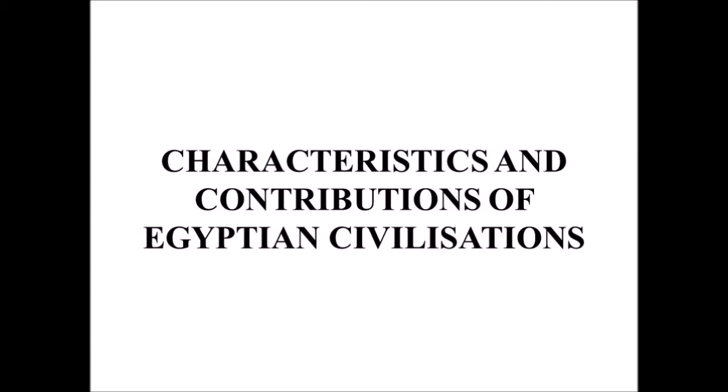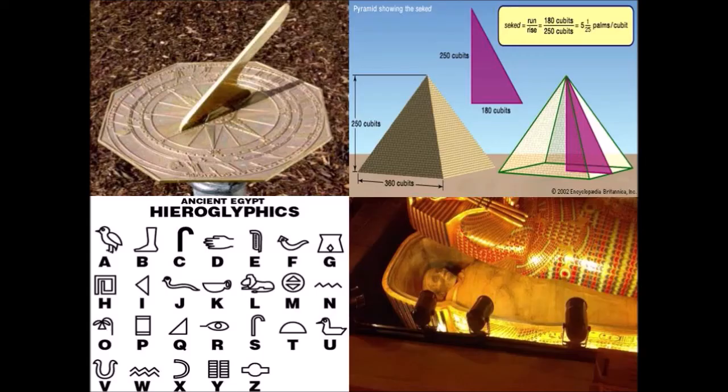Characteristics and Contributions of Egyptian Civilization. Egyptians developed the solar calendar. The pyramids and their designs show mathematical and surveying skills. The hieroglyphic writing system and preservation of the human body through mummification demonstrate their advanced application of science and technology.